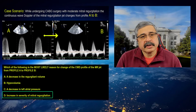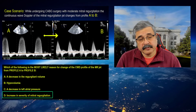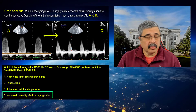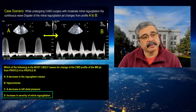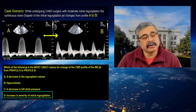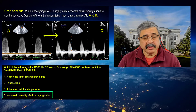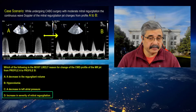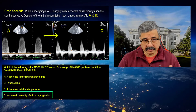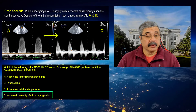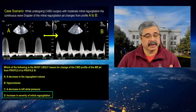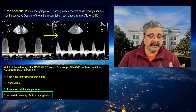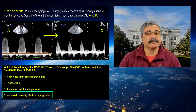Let's go over the choices of this question first before we go over the explanation of the concept being presented. The profile of the continuous-wave Doppler of the mitral regurgitation jet not only represents the intensity based on the grayscale, the duration of the MR jet, whether it's early, mid, or late systolic or holosystolic,